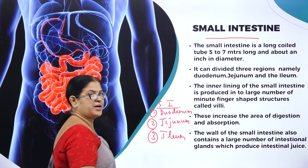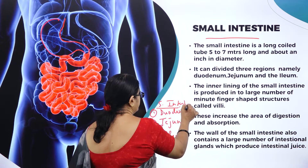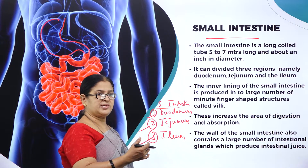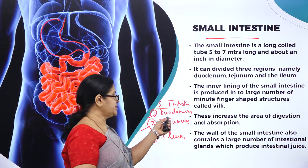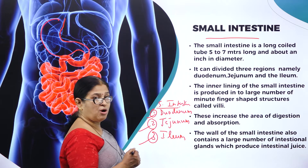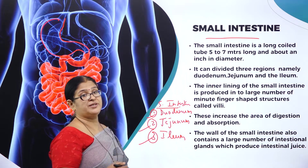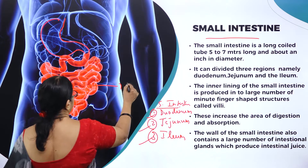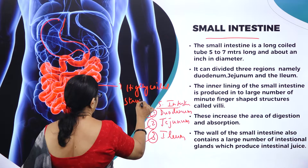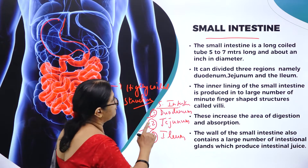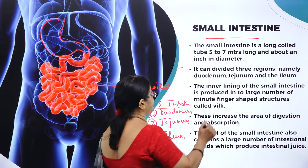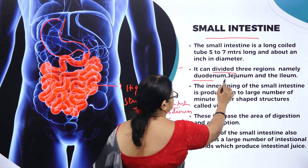The three very important parts of the small intestine are duodenum, jejunum, and ileum. From the stomach, the intestine starts with the first part called duodenum, then comes jejunum, then ileum. The small intestine is a long coiled tube, 5 to 7 meters long and about one inch in diameter. It is a highly coiled structure divided into three regions: duodenum, jejunum, and ileum.